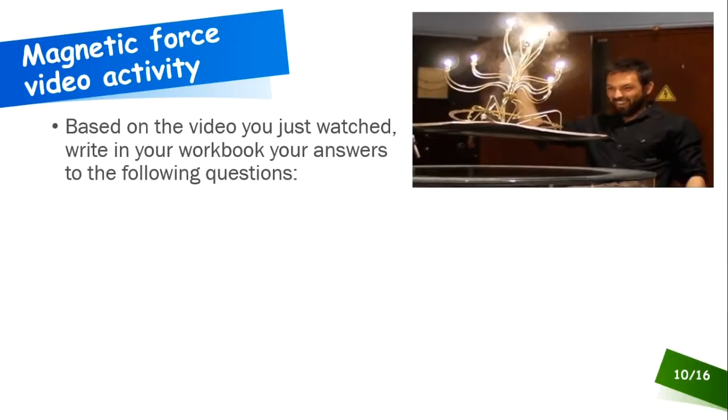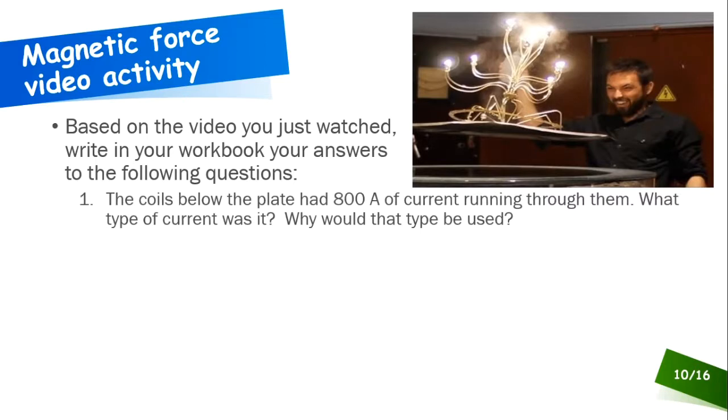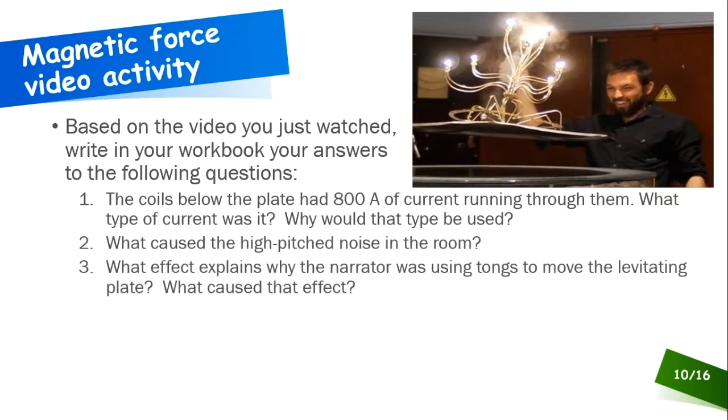Let's look at an activity that's based on the video that we just saw. In your workbook, go ahead and answer the following questions after you stop the video. One, the coils below the plate had 800 amps of current running through them. What type of current was it, and why would that type be used? Two, what caused the high-pitched noise in the room? Three, what effect explains why the narrator was using tongs to move the levitating plate, and what caused that effect? Go ahead, stop the video, and work these questions out in your workbook. And then, when you're ready, restart the lecture video, and we'll see how you did.